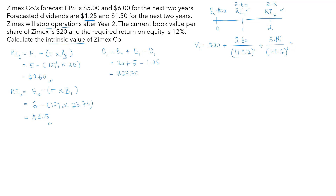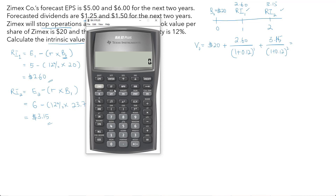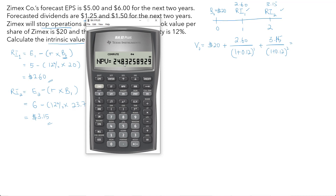We can use the Texas BA II Plus financial calculator and input these values into the cash flow worksheet. Reset the worksheet, set CF0 = 20, C01 = 2.60, C02 = 3.15, then go to NPV, set I = 12, scroll down and press Compute. The result gives us an intrinsic value of $24.83 for ZMAX.